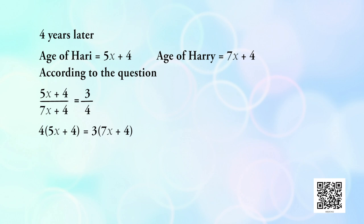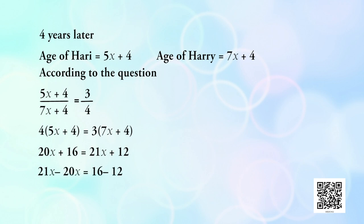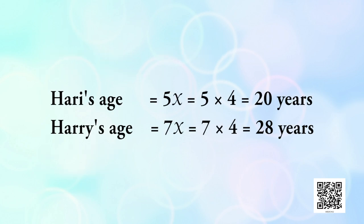By cross-multiplying: 4(5x + 4) = 3(7x + 4), so 20x + 16 = 21x + 12. Taking x terms on one side: 21x − 20x = 16 − 12, therefore x = 4. Hari's present age is 5x = 5 × 4 = 20 years.